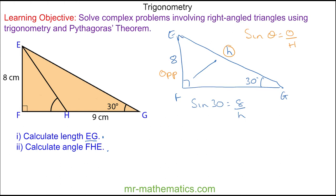We'll move the h to the other side by multiplying both sides by h, so we have h times sine 30 equals 8. We'll divide both sides by sine 30, so h is equal to 16 centimetres.